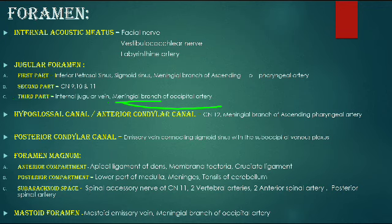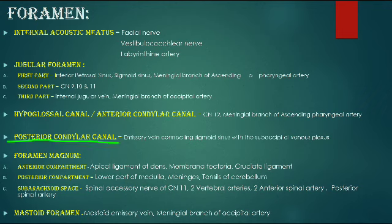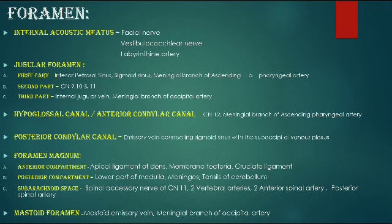The hypoglossal canal, also called the anterior condylar canal, is on the lateral aspect of the foramen magnum. Its contents are the hypoglossal nerve (CN XII) and the meningeal branch of the ascending pharyngeal artery. The posterior condylar canal contains just an emissary vein connecting the sigmoid sinus with the suboccipital venous plexus.